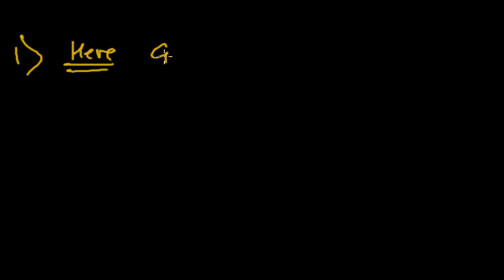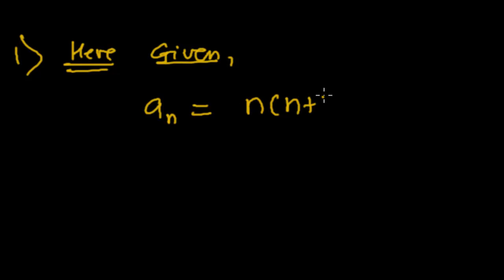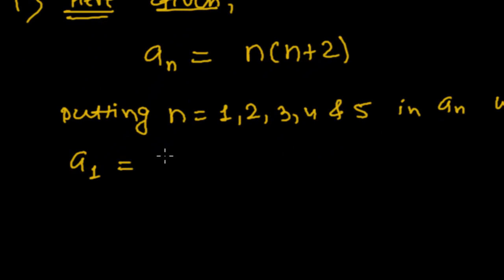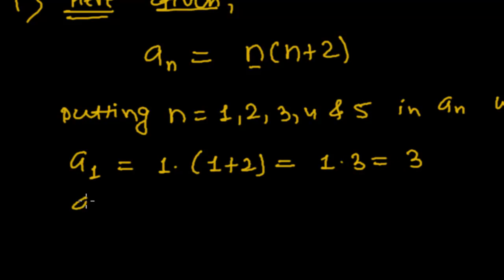For the first sequence, a_n is given as n(n+2), where this is the nth term. Putting n = 1, 2, 3, 4, and 5 to get the five terms. a_1: since n is 1, that is 1 times (1+2) = 1 times 3 = 3. And a_2: n is 2, so 2 times (2+2) = 2 times 4 = 8.